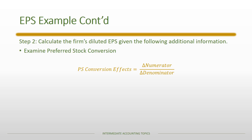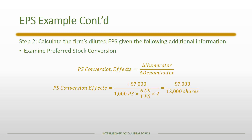Now examining the preferred stock conversion: there is both a numerator and a denominator effect. The numerator increases by $7,000 because the firm would no longer pay preferred stock dividends. There are 1,000 convertible preferred shares with a conversion ratio of 6-to-1; after the stock dividend adjustment (multiplied by two), the firm would issue 12,000 common shares. The preferred stock conversion effect is $0.5833 per share. Since that is less than the current EPS of $0.6335, it is potentially dilutive and is included.